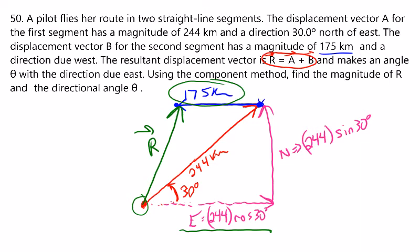What I would highly suggest is now that I know how far east they went in the first part and how far west they went in the second part, we should be able to find how far east of their starting point they are. So it's going to be this little piece, which is really the difference between this east down here and this 175 up there.